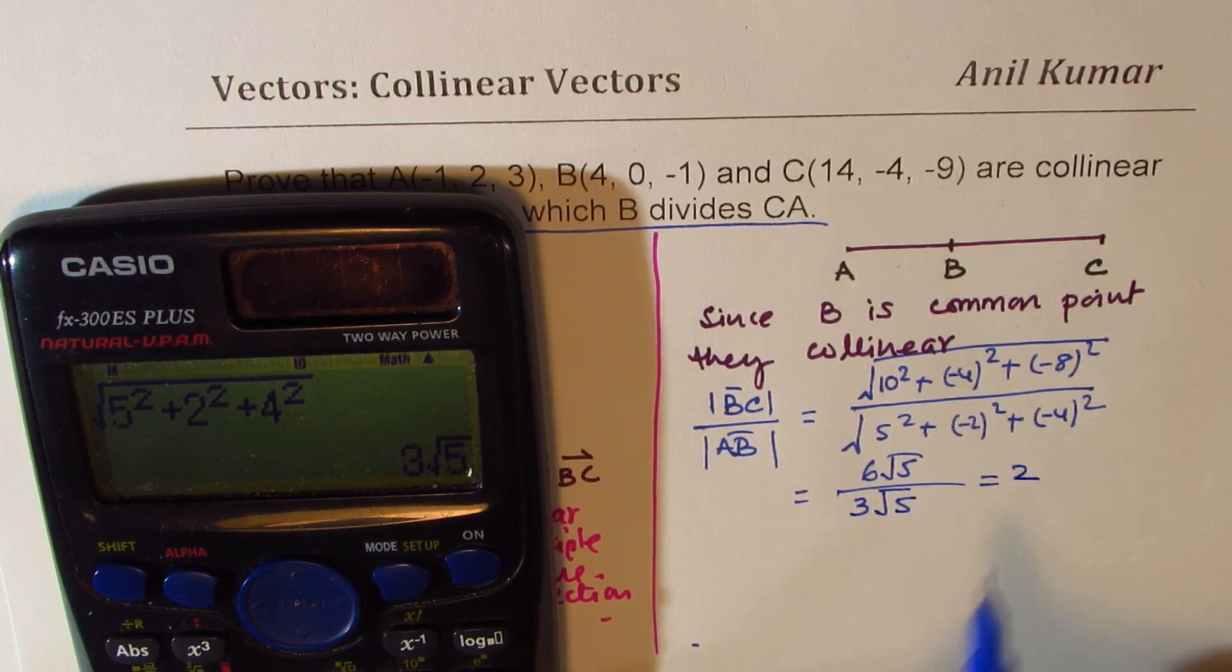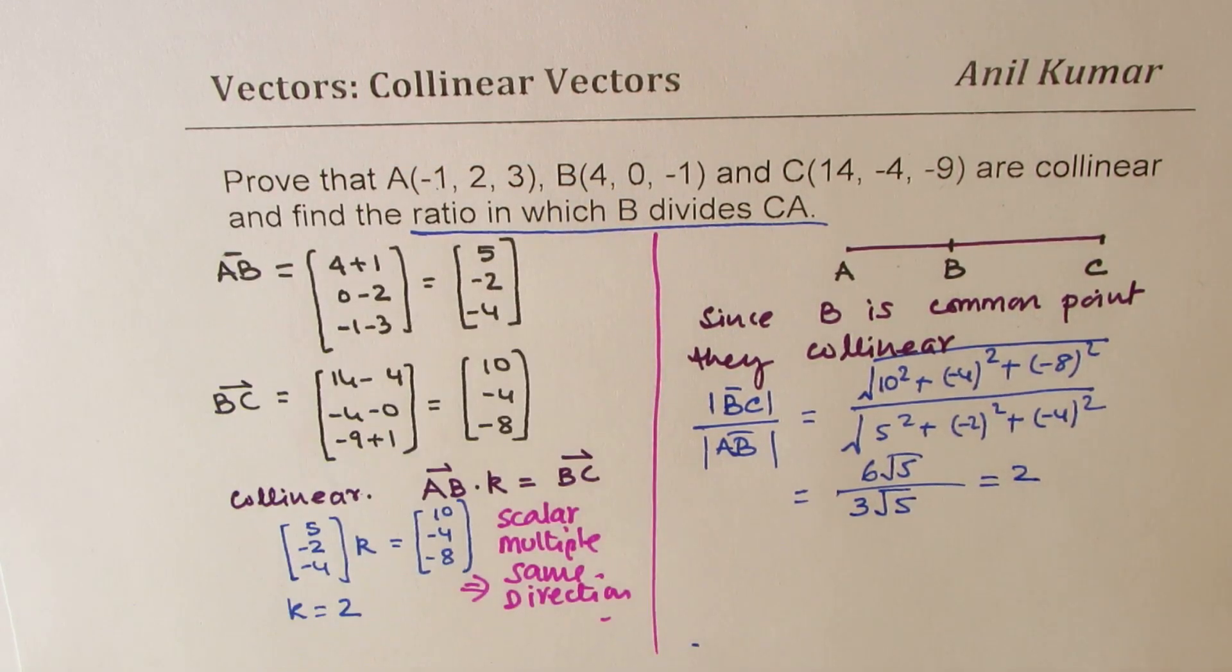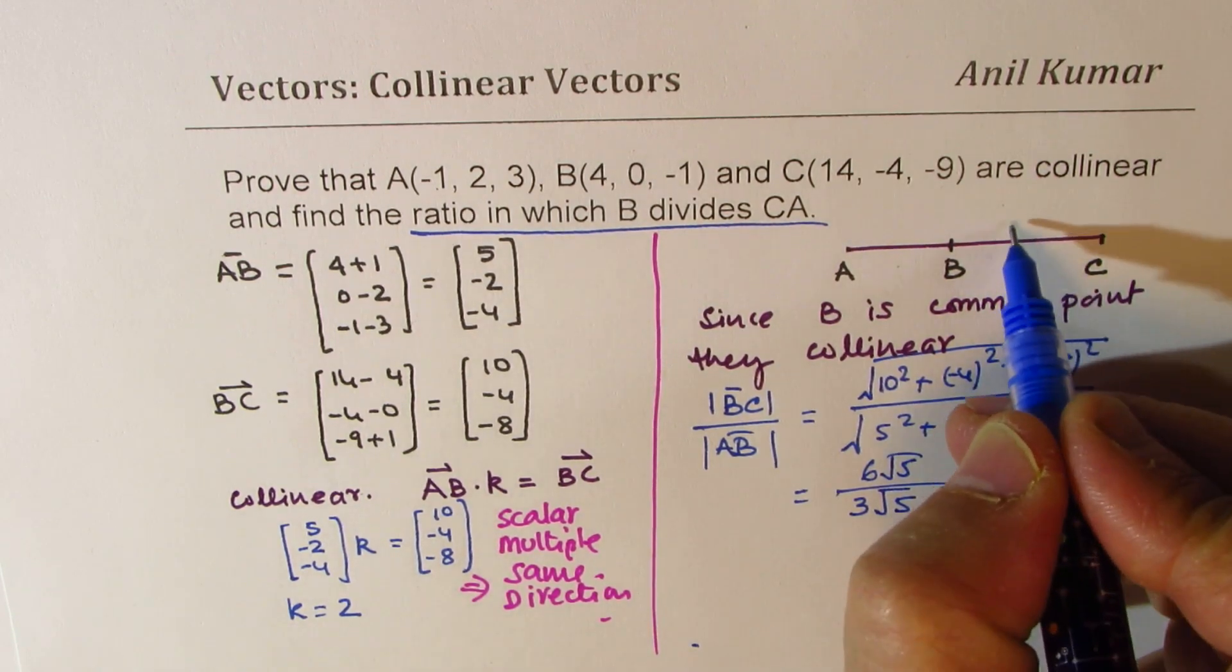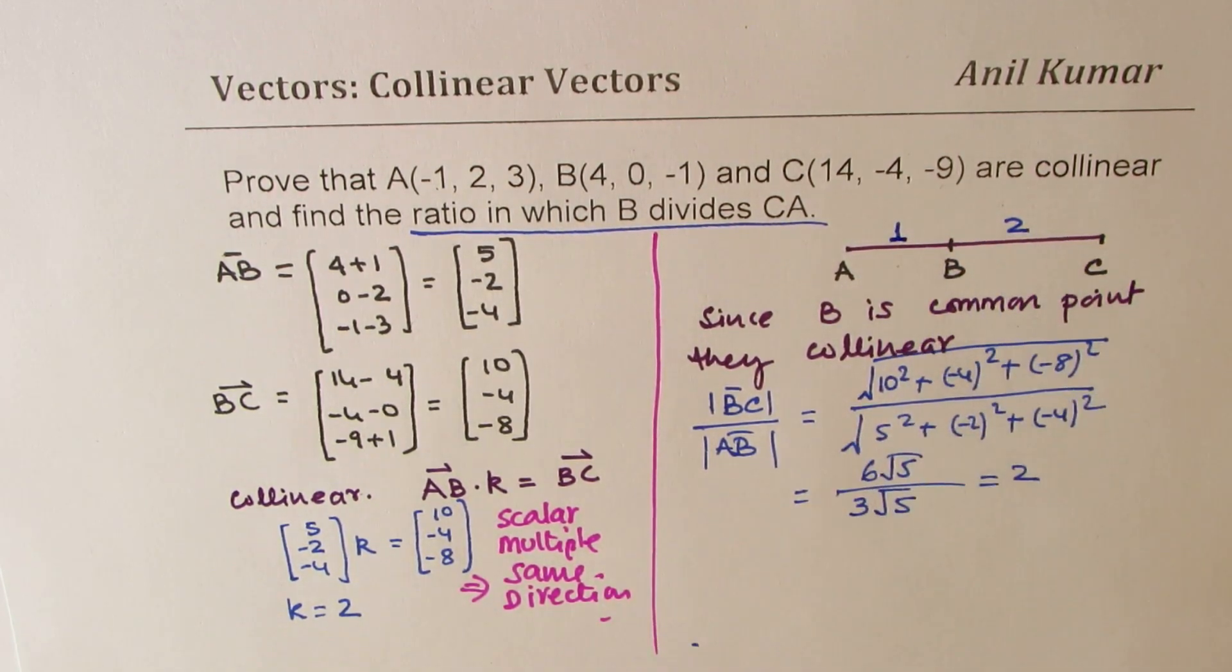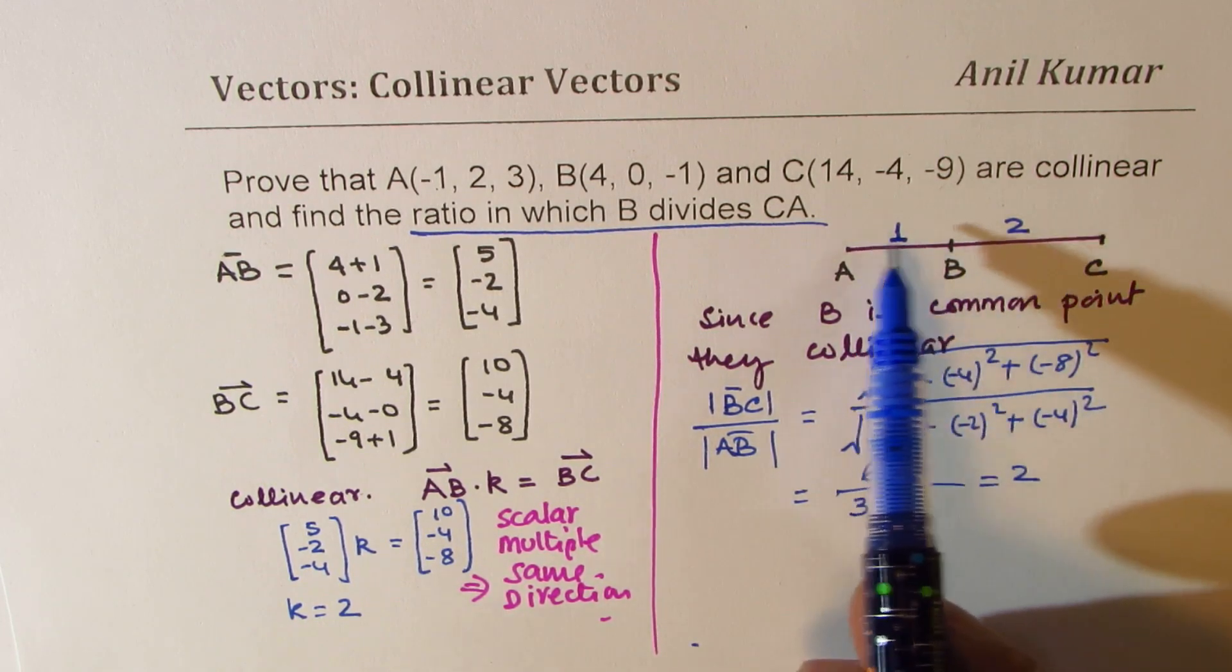This is 2. So that clearly indicates that this ratio is 2 is to 1. So B divides AC in the ratio of 2 is to 1.